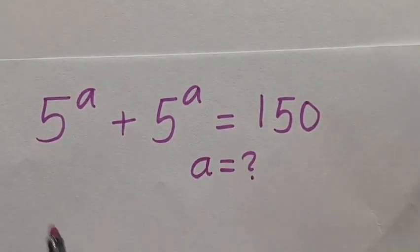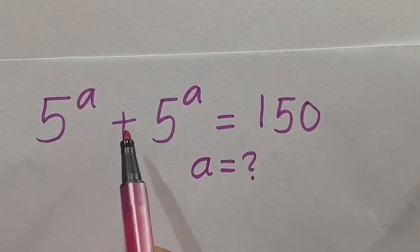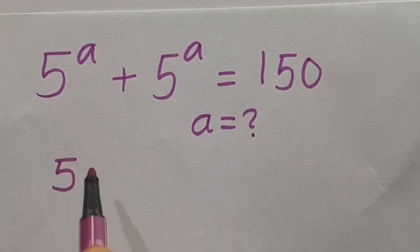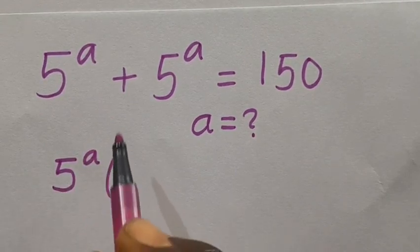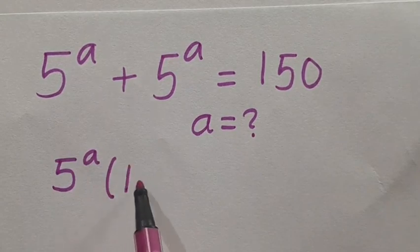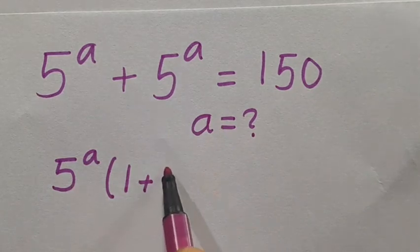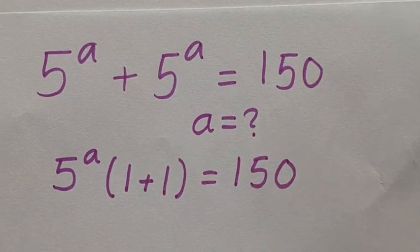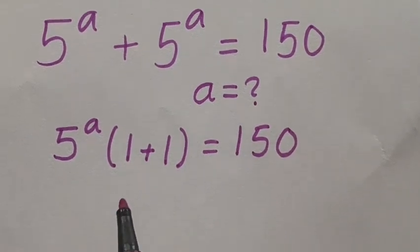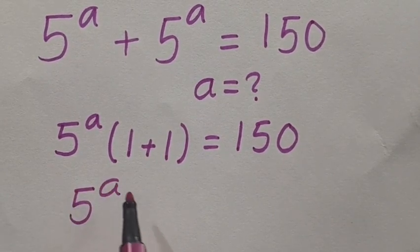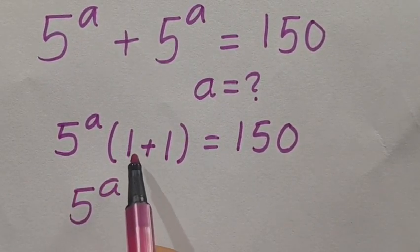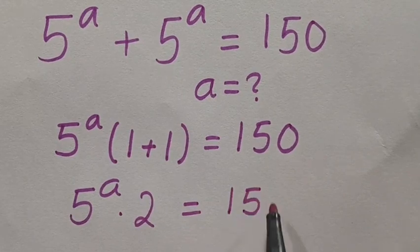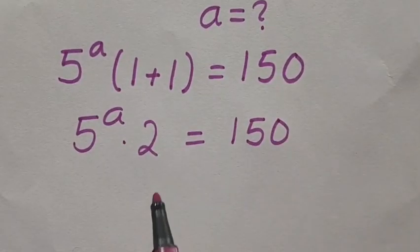Given that 5 to the power of a plus 5 to the power of a equals 150. From here, we have 5 to the power of a in common, so factoring it out: 5^a times (1 plus 1) will give us 2, so we have 5^a times 2 equals 150.